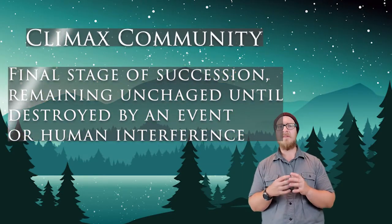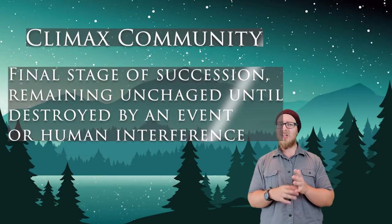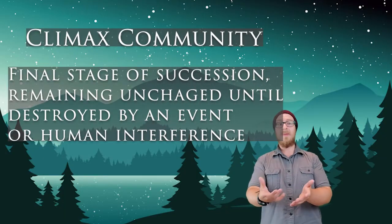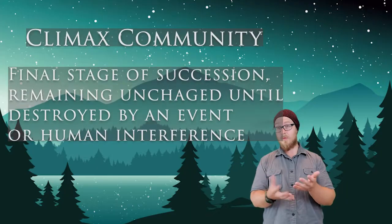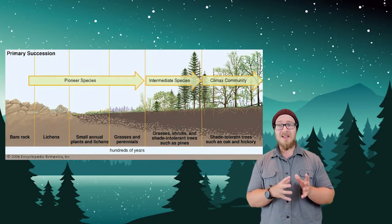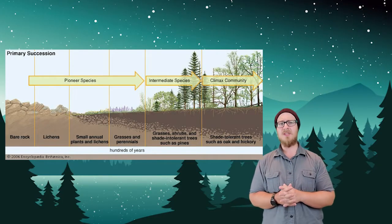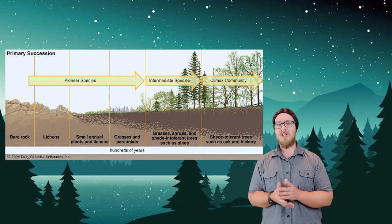A climax community is the final stage of succession, remaining relatively unchanged until destroyed by an event such as a fire or some sort of human interference. What's interesting to note is that climax communities have slightly less biodiversity than transitional communities preceding them.